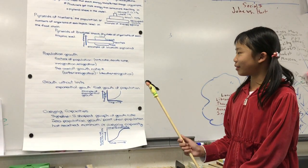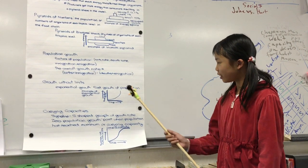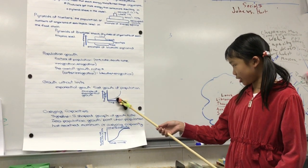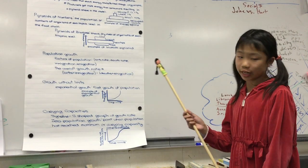This model is an example of exponential growth. At the bottom is time, and over here is population size.